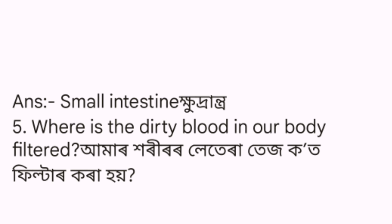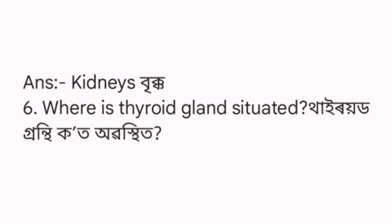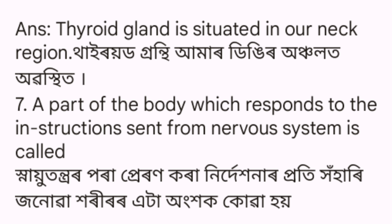Question 5: Where is the dirty blood in our body filtered? The answer is the kidneys. Question 6: Where is the thyroid gland located? The thyroid gland is located within the neck region.